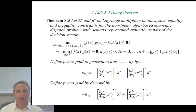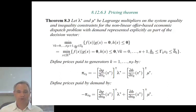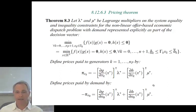Suppose lambda* and mu* are the Lagrange multipliers on the system equality and inequality constraints for the non-linear offer-based economic dispatch problem. Demand is explicitly represented as part of the decision vector. The problem is to minimize f(x) subject to system equality constraints, system inequality constraints, and the linear generator inequality constraints. The prices paid to the generators are PI_XK equal to minus DG/DX_K evaluated at X* transpose lambda* minus DH/DX_K evaluated at X* transpose mu*.